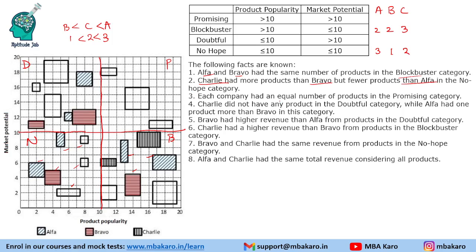Each company had an equal number of products in the Promising category — there are only three products, so each company gets exactly one. For the Doubtful category, Charlie had zero products, and Alpha had one more than Bravo. There are seven Doubtful products in total, so Alpha gets four and Bravo gets three.